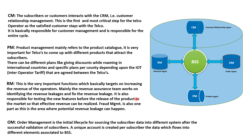There are four different categories of BSS which are very important. The first is CRM — Customer Relationship Management. The next is OM — Order Management. Then Product Management, and then Revenue Assurance.